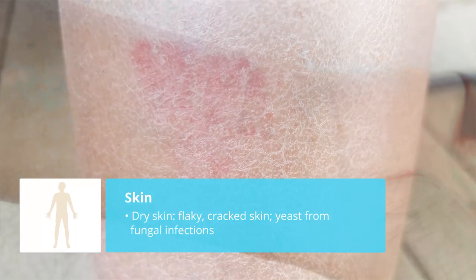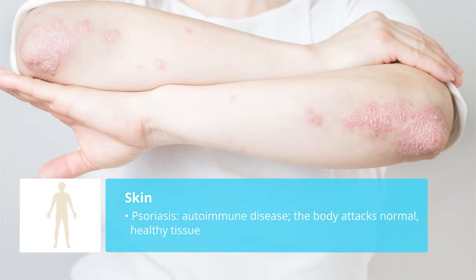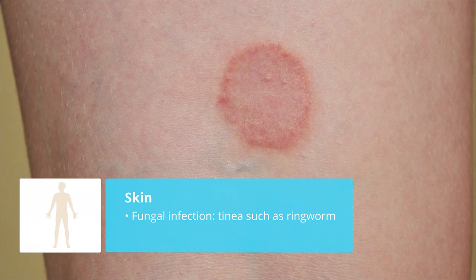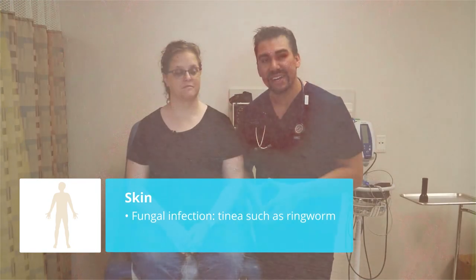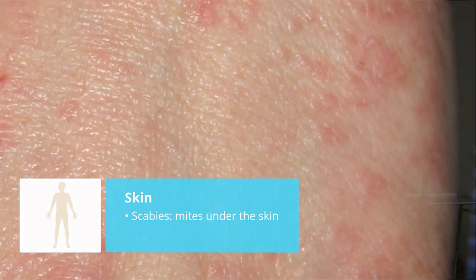We also see eczema — a chronic skin disorder where the skin becomes red, itchy, and dry. An autoimmune disorder called psoriasis is also very common, where the body attacks normal healthy tissue. A key sign is silver plaques with reddened, roughened, raised skin that is flat on top. For all our sports players, ringworm is a very common fungal infection. And scabies — those little bugs that go underneath the skin and cause a lot of itching — are something you'll likely see in the clinical setting.